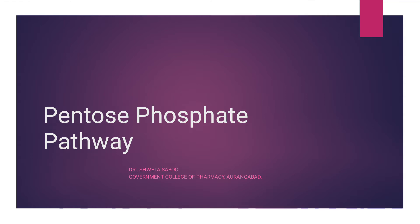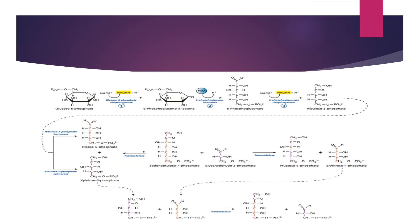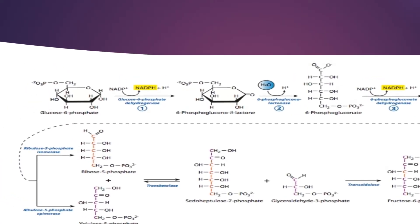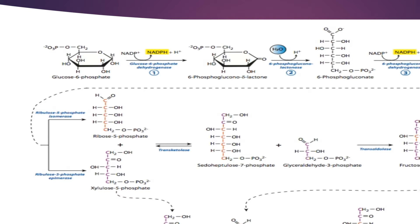Now we start the pentose phosphate pathway and discuss the important steps involved. You can see here glucose 6-phosphate, which we also see in glycolysis. Basically, the pentose phosphate pathway is divided into two steps: one is the oxidative step and another one is the non-oxidative step.